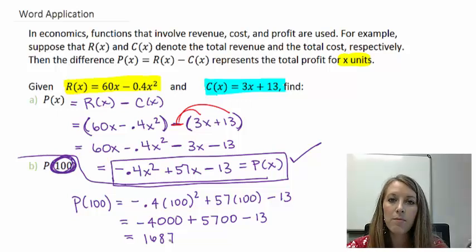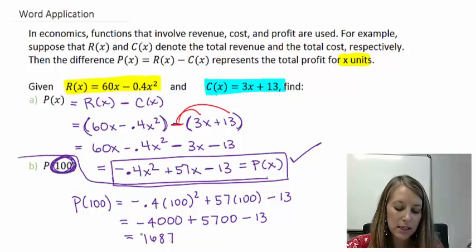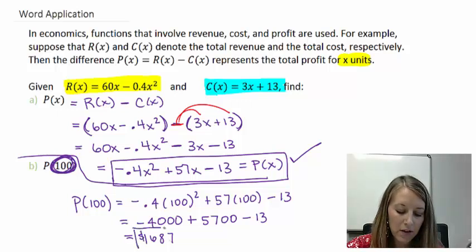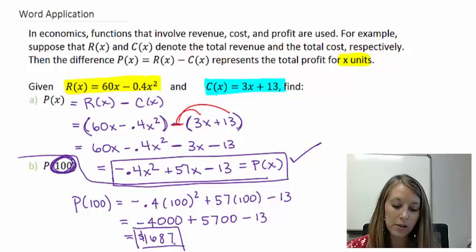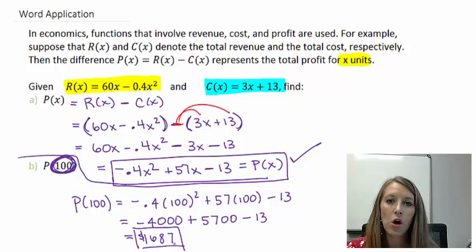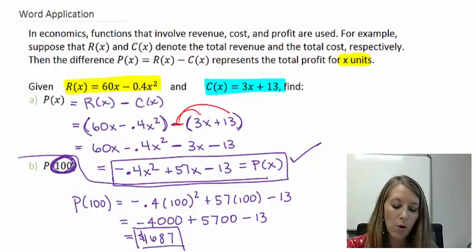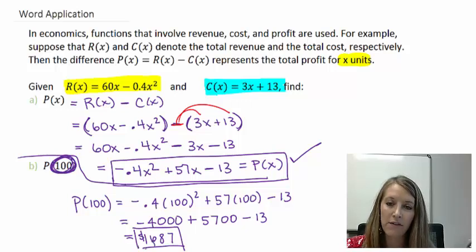So, that tells me my profit of utilizing 100 units is $1,687. Of course, we are in dollars because we are talking about profit. So, we would be making $1,687 here.